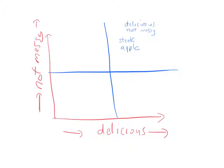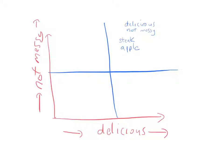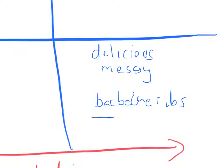What about this quadrant in the lower right here, this lower right-hand quadrant? What would we say about it? Well, this quadrant is still delicious, but it's messy. What would be a food like that? Maybe barbecue ribs, delicious but messy.